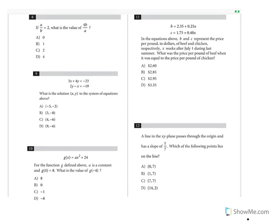Question 8: If A over B equals 2, what is the value of 4B over A? One approach: invert the original — if A/B equals 2, then B/A equals 1/2. So 4B over A equals 4 times B/A equals 4 times 1/2 equals 2. Alternatively, if A/B equals 2, then A equals 2B. Substituting: 4B over 2B equals 2. Answer choice C.